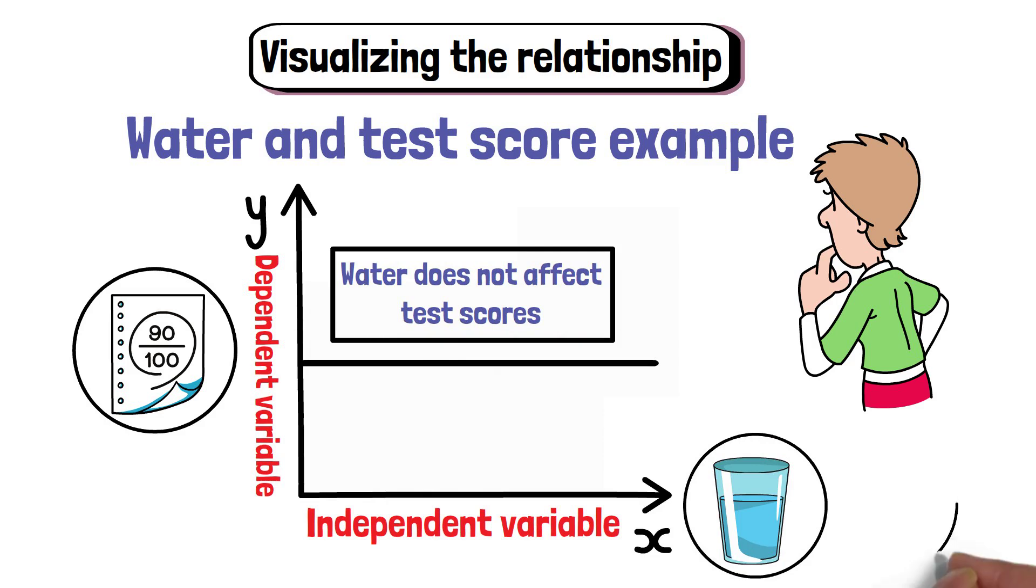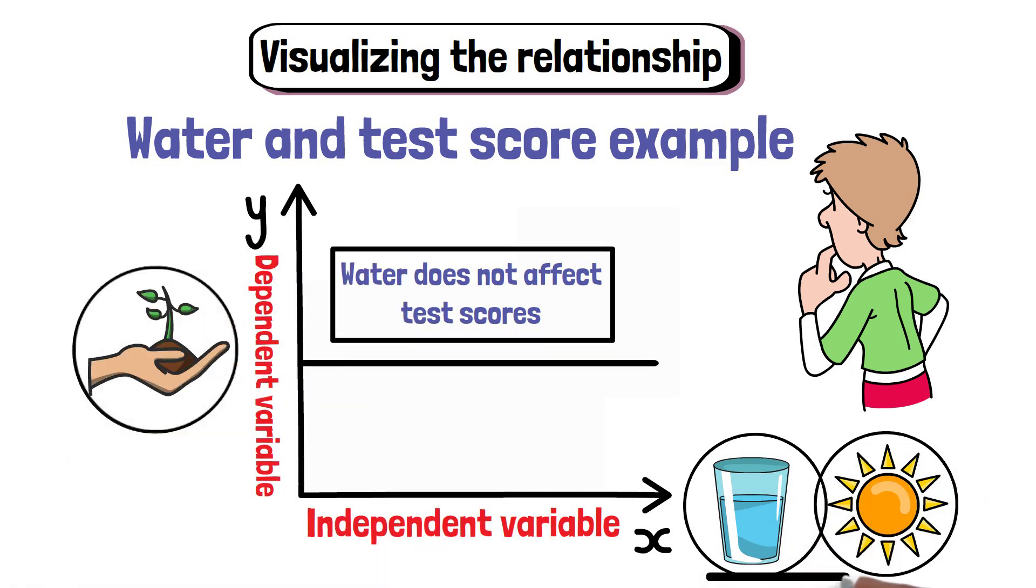Sometimes, there can be more than one independent variable. For instance, if you want to see how both sunlight and water affect plant growth, you would have two independent variables.